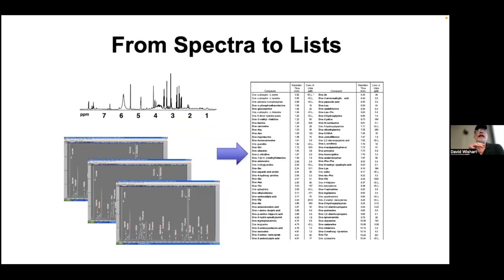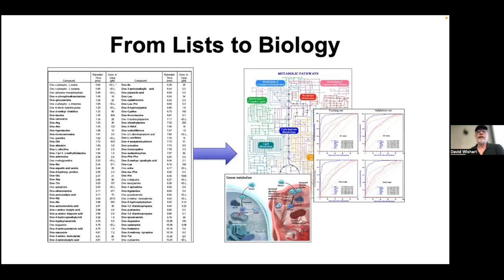We spent the lab and part of today learning about how to go from spectra to lists of metabolites and concentrations — those are the CSV files that hopefully most or all of you have uploaded to the Dropbox. What we're going to focus on now is going from those lists to biology.